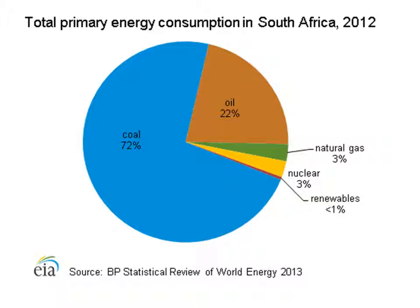Looking at our total energy consumption: primary energy consumption refers to the source of that energy. Looking at this pie chart, we can see that coal makes up a good 72% — by far the dominant source of primary energy. Oil is mostly converted to petrol to drive motor cars, buses and trucks. There is natural gas, with those power stations along the southern Cape coast, and nuclear — we have one nuclear station in the western Cape. Renewables, which refers to hydropower, wind power and solar power, is less than 1%, but that percentage is set to grow quite dramatically in the future.